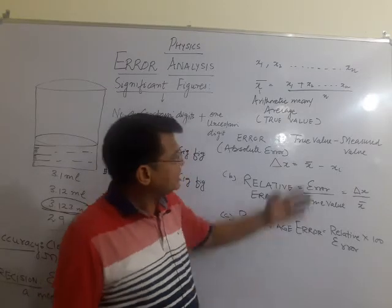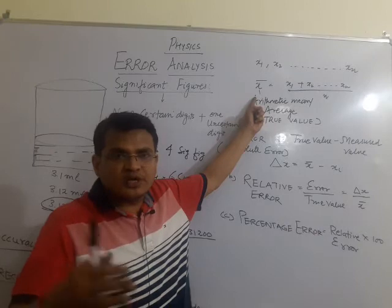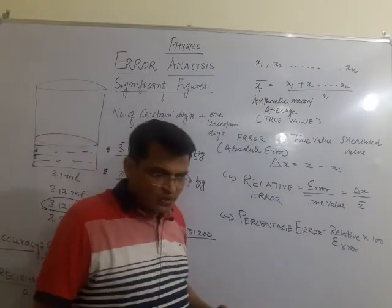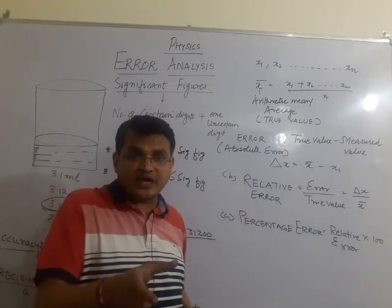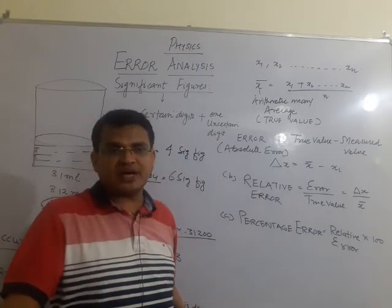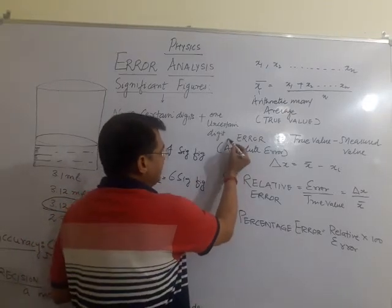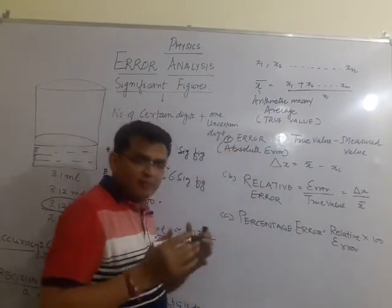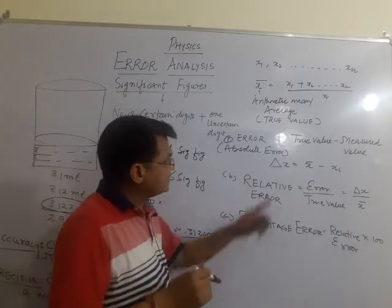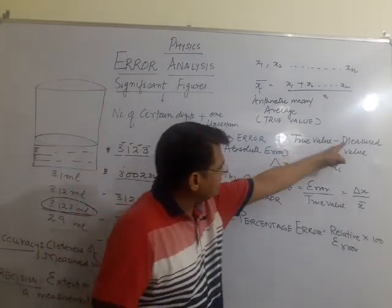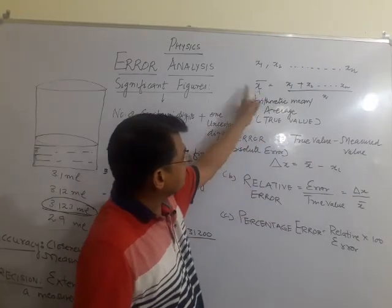So we define error in general: it is defined as the difference between the true value and the measured value. This term is called absolute error. Absolute error is defined as the difference of the true value and the measured value, and the true value is the arithmetic mean of all measurements.